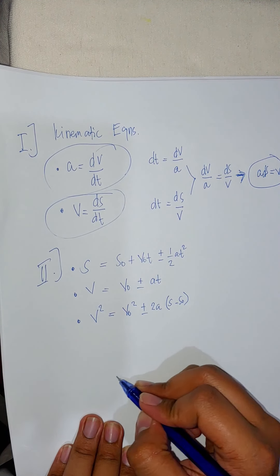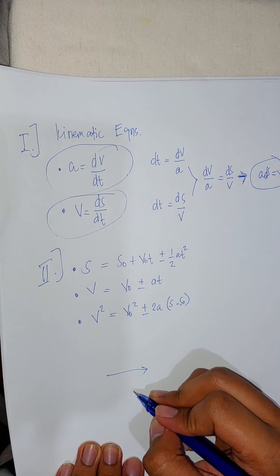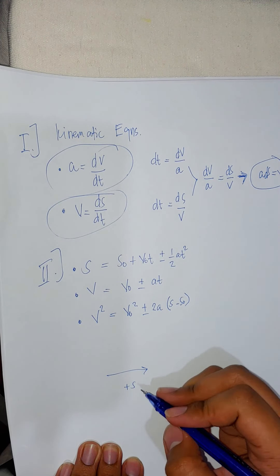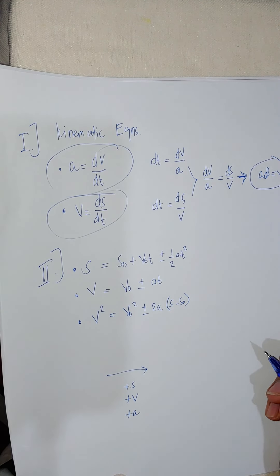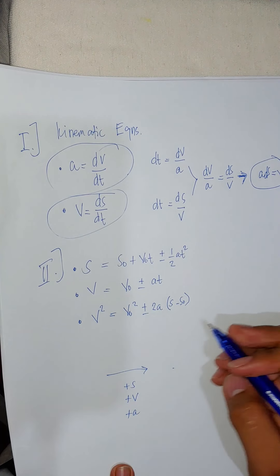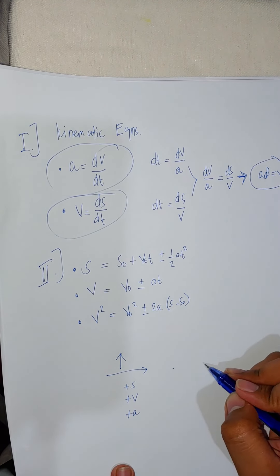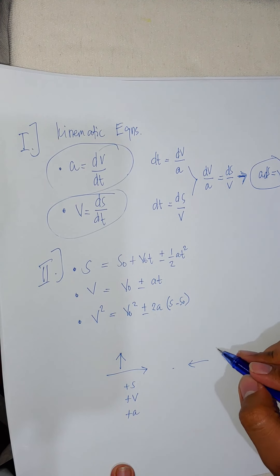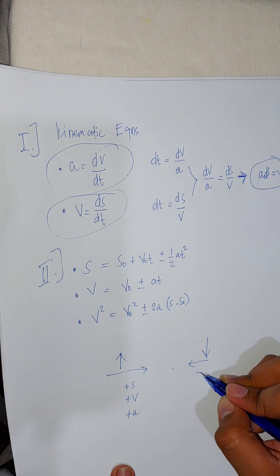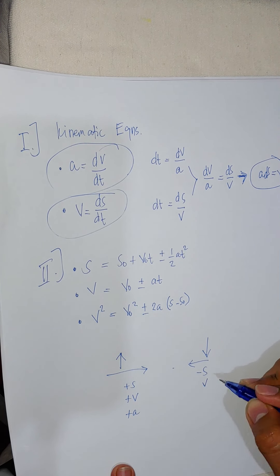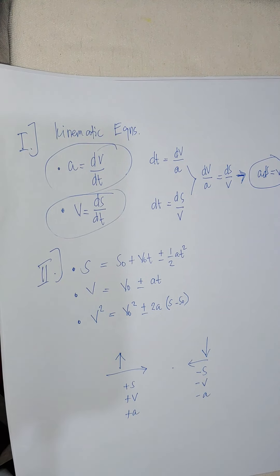For sign convention: if a particle is moving to the right, the signs for position, velocity, and acceleration are all positive. The same applies if the object moves upward. If the object moves to the left or downward, the sign convention for position, velocity, and acceleration are all negative.